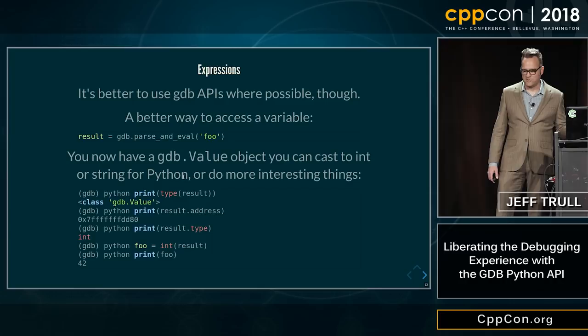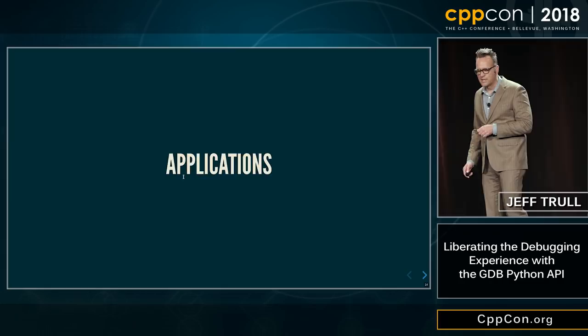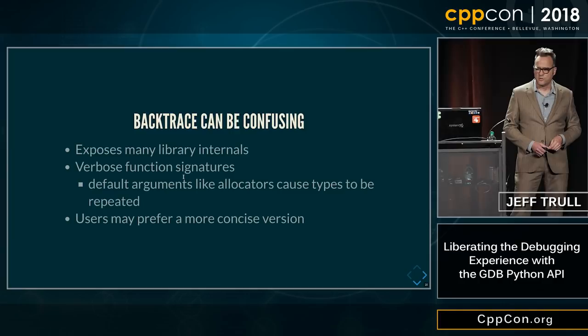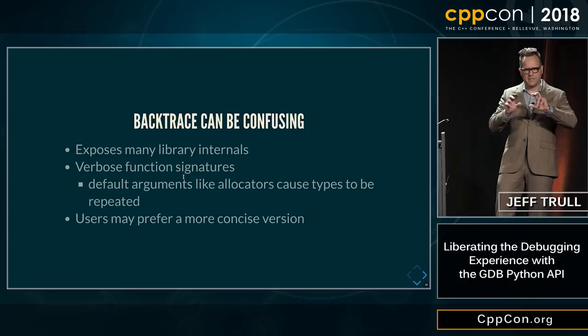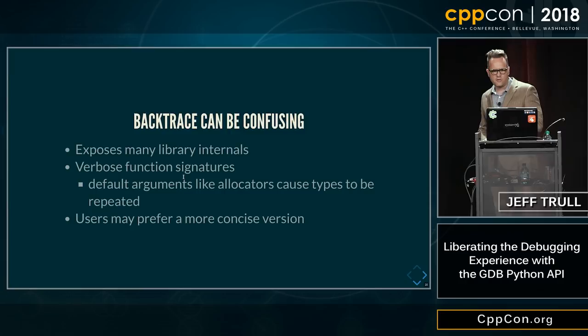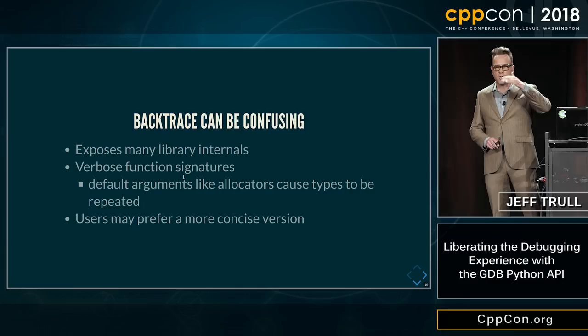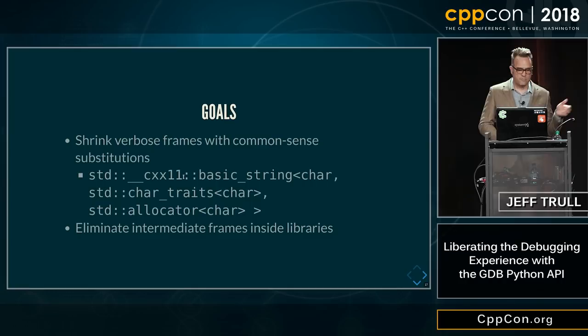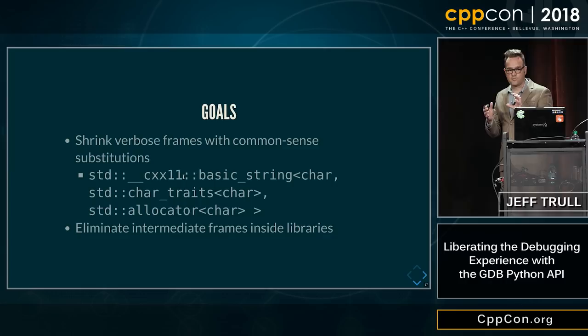Let's dive into a few applications. The first one I want to talk about is improving stack traces. Backtraces in C++ can be pretty confusing — they tend to expose library internals. Often the function signatures, because of all these types expanded in the template arguments, can be very verbose. They can also show you the internal calls within the library that are maybe too much information for someone who's just trying to figure out what's wrong with their code. The goal is to shrink those verbose names down and eliminate stack frames that are internal to libraries.